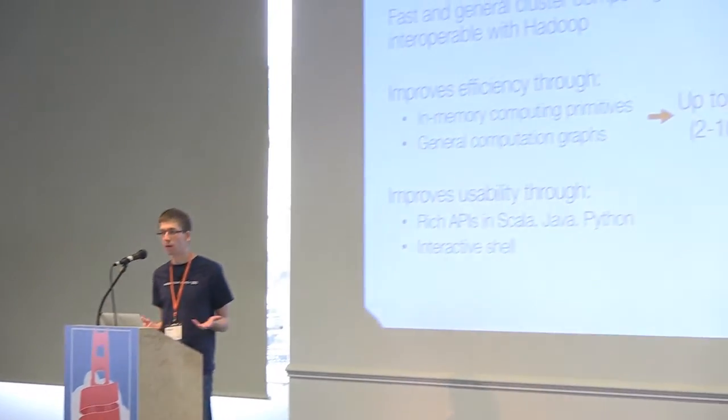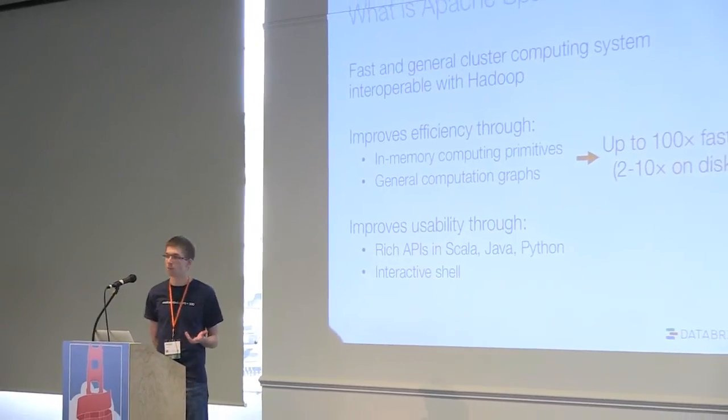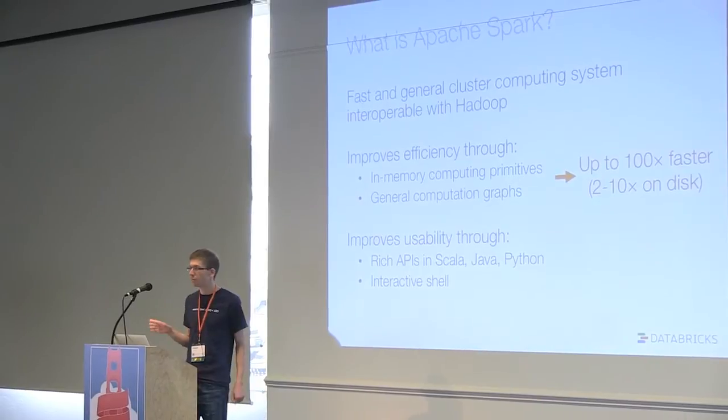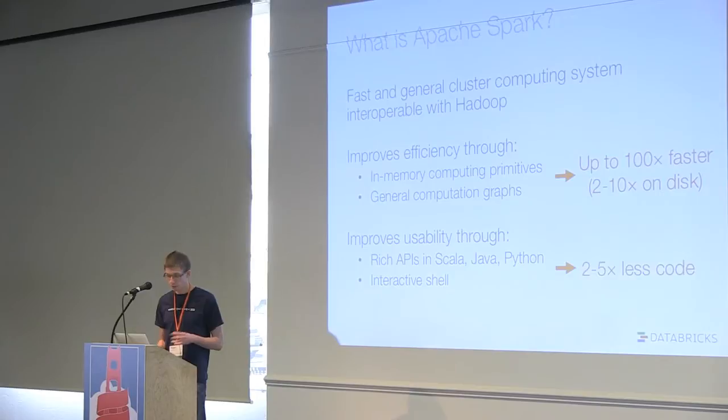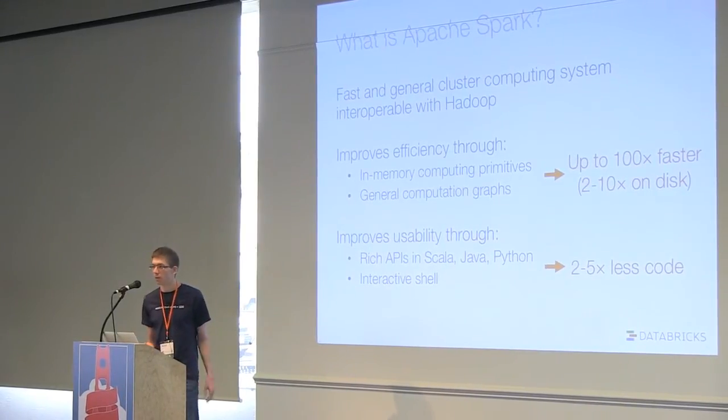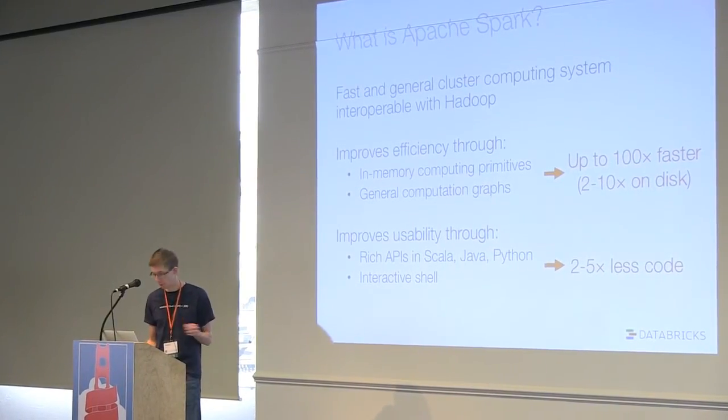Second, it improves usability through functional APIs in Scala, Java, and Python. And one fun thing is you can also use it interactively from the Python shell. With the in-memory feature, you can run as much as a hundred times faster than MapReduce-based systems. Even on disk with more general computation graphs, you can see a significant speedup. And you often write many times less code than traditional MapReduce programming.